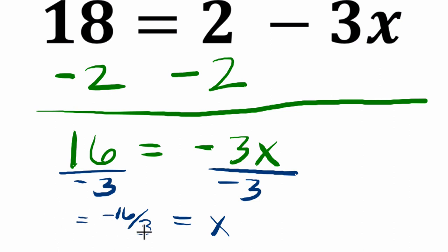And then I can say, 3 goes into 16 five times, or negative 5 times, excuse me. 3 goes into negative 16 negative 5 times with a remainder of 1 or 1 third, which is 0.3 repeating.